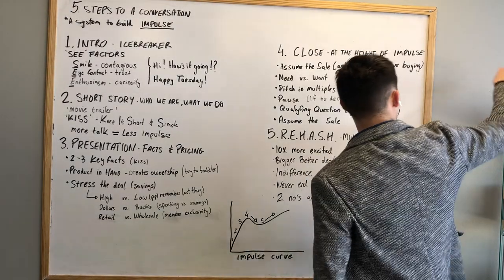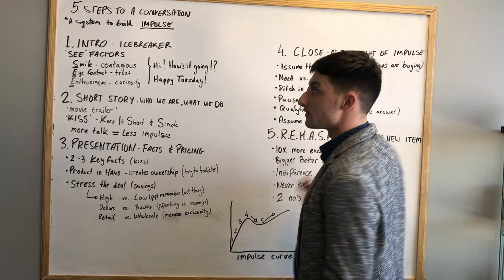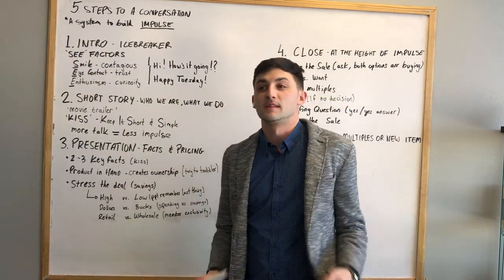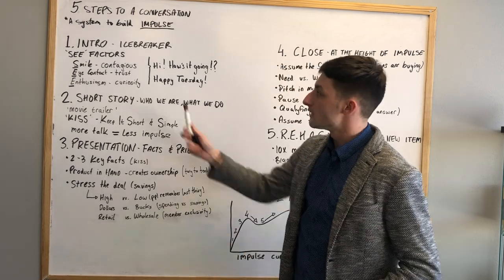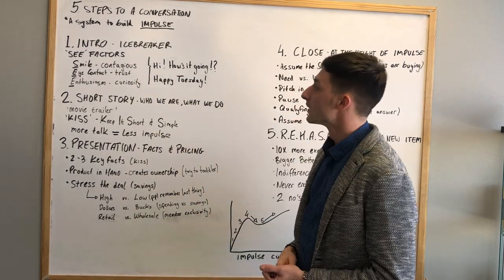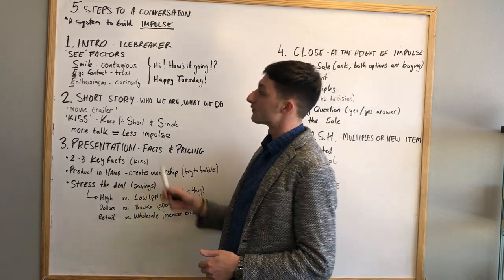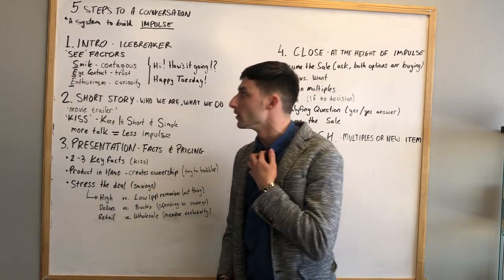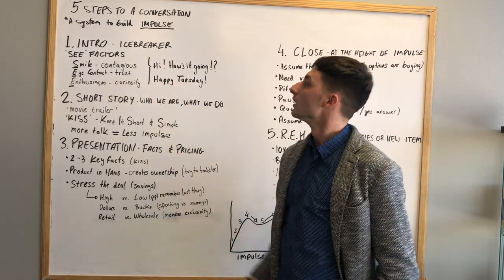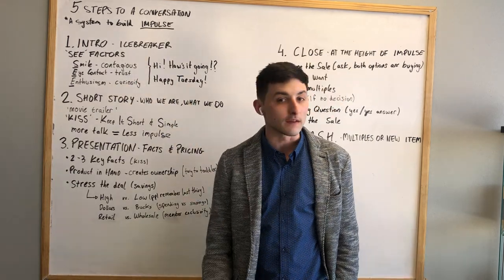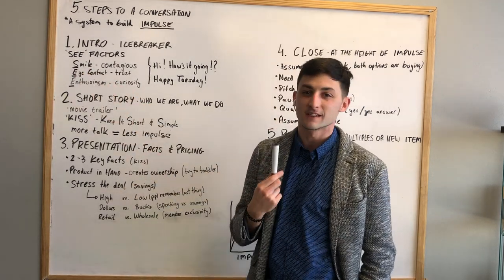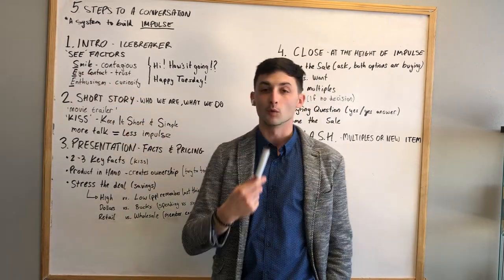The first system today is the five steps to a conversation. This is the first one you should always learn — it's a system to build impulse, and that's how you should teach it back. The first step of the five steps to build impulse is the introduction: an icebreaker, which means starting a conversation by breaking the ice. You use the C factors, which includes smiling because it's contagious.